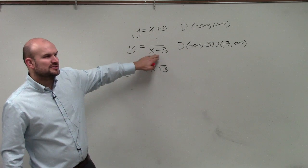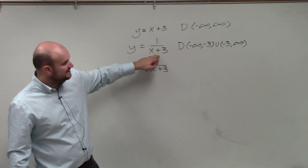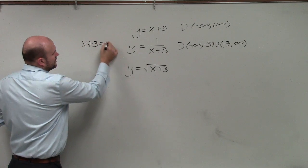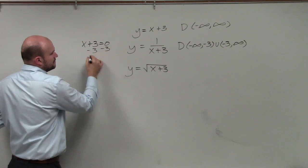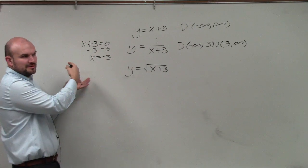If there's a problem where the denominator is more complicated than this, to find what numbers make the denominator equal to 0, just set that number equal to 0 and solve. That's how we got that negative 3. Just set the denominator equal to 0 and solve.